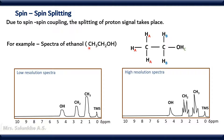The coupling takes place between methyl and methylene group protons. The spin state of methyl group protons affects the spin state of methylene group protons. Therefore, the methylene group signal is split into four lines. Similarly, the spin state of methylene group protons affects the methyl group protons, and the signal of methyl group is also split into three lines. There is magnetic interaction between methyl and methylene group protons.